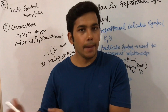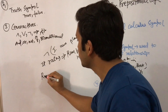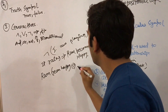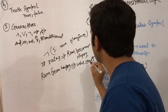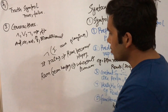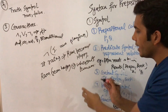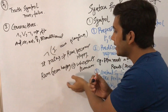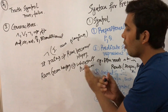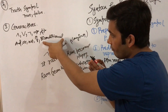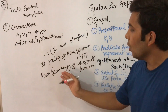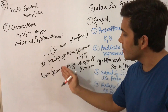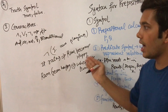The fifth connective is the biconditional. It is used when both sides are dependent on each other. For example, 'Ram eats ice cream and becomes happy' — when Ram eats ice cream he becomes happy, and when Ram is happy it can also be inferred that he is eating ice cream. So biconditional connectives are used when both statements are mutually dependent on each other.